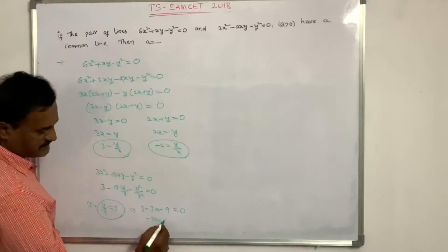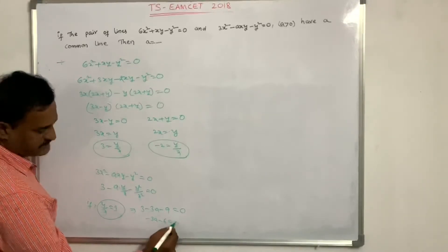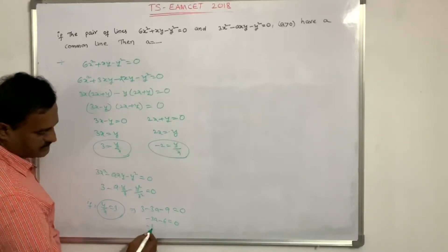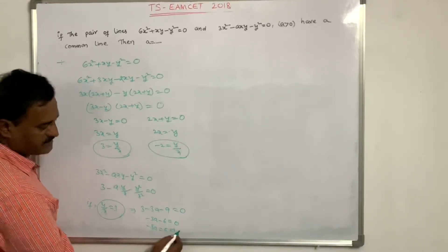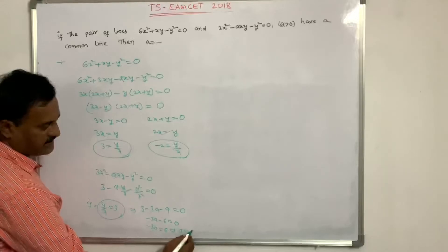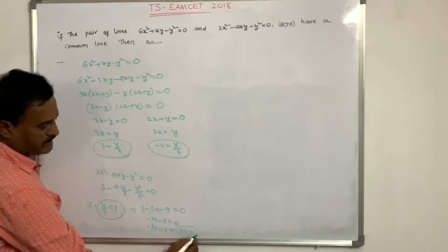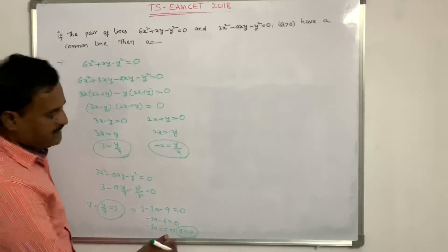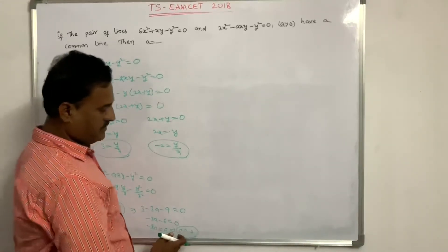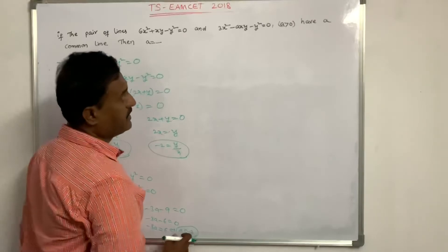That gives −3A − 6 = 0, so −3A = 6, giving A = −2. Since A > 0 is required, this solution is rejected.